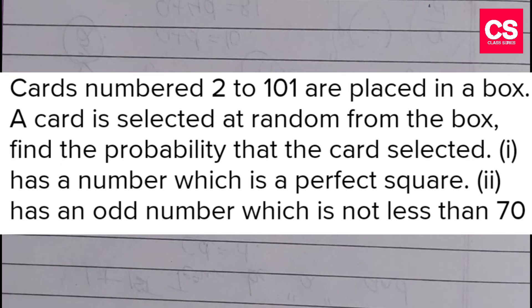Basically, cards numbered 2 to 101 are placed in a box. All the numbers from 2 to 101 are placed: 2, 3, 4, 5 till 101. These are all the cards placed in a box.